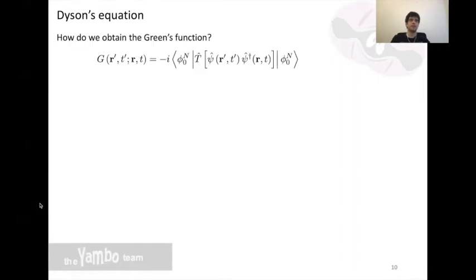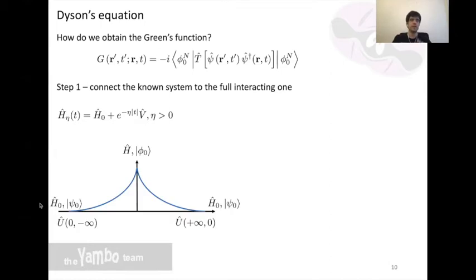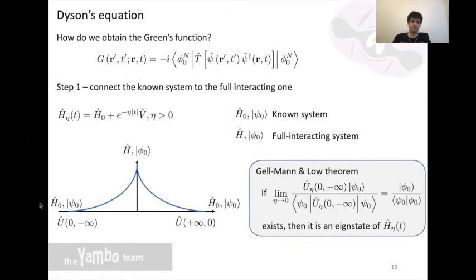For this we will be following the diagrammatic approach to derive the equation of motion for G. There are two important steps on this path. The first is to connect the interacting system to another whose Hamiltonian we can actually diagonalize. This can be the independent particle case, DFT, or any other case or solution you know. We connect the two systems by slowly activating the interactions and then deactivating them. During this adiabatic change, the state that we are propagating remains an eigenstate of our Hamiltonian, thanks to the Gell-Mann Low theorem. This means that you can safely place this expression in the Green's function and use the ground state of the known system.